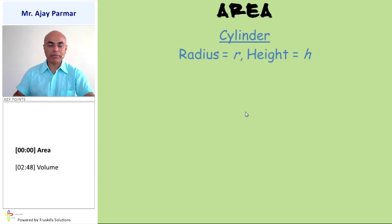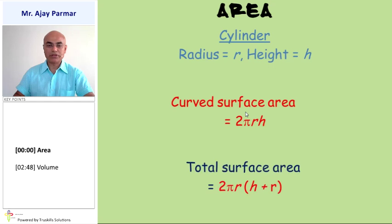Cylinder, if the dimensions are represented by radius as R and height as H, then the curved surface area of the cylinder would be 2 pi RH. Whereas the total surface area will be equal to 2 pi R into H plus R because that will include the top and the bottom circles also.